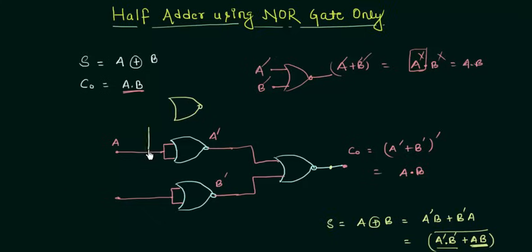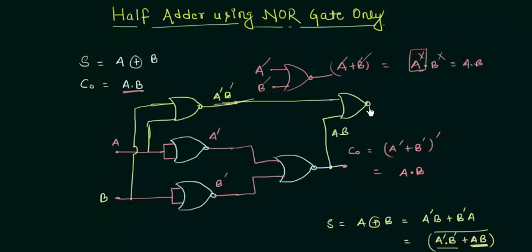This is our NOR gate. A complement is one of the input, B complement is the other input. So output will be A complement B complement. And here we are having AB. We just only want to have the OR operation between A complement B complement and AB and then the whole complement. So it is very easy to implement it with a single NOR gate.